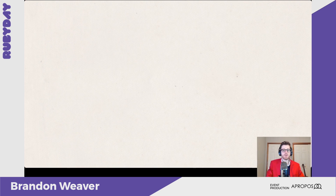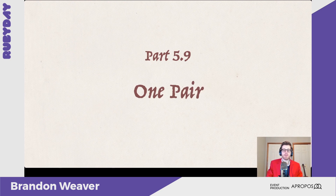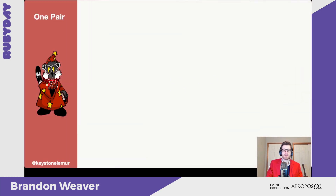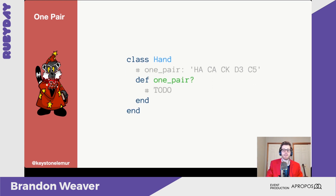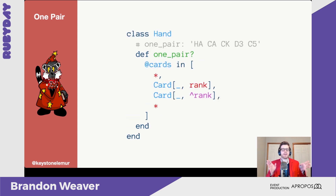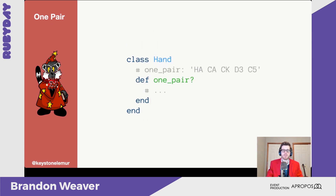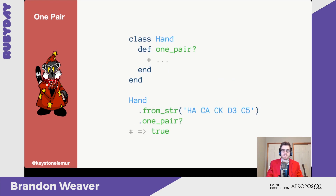That brings us to our last pattern hand: a single pair — just like two pairs but only one pair. We add an example of two aces. We define a method and check against all those cards, ensuring that somewhere in that pattern there are two cards with the same rank next to each other. Since these are sorted, we can do this. Testing it, we find out it is indeed true.